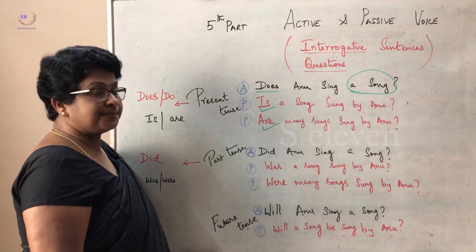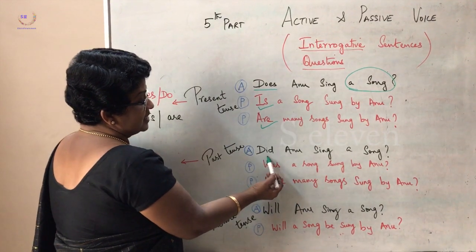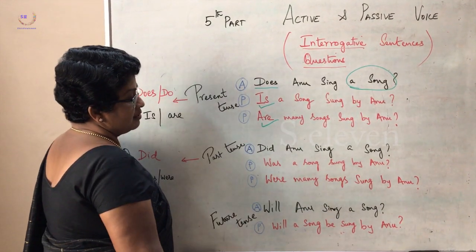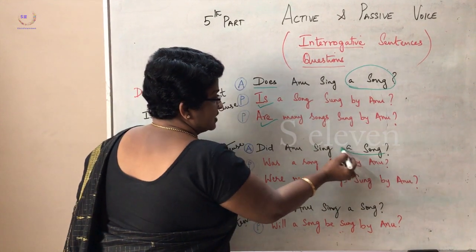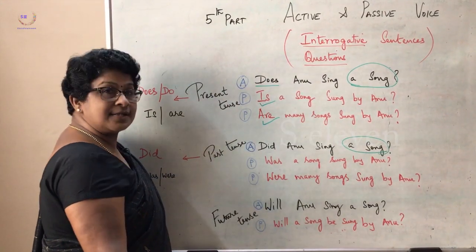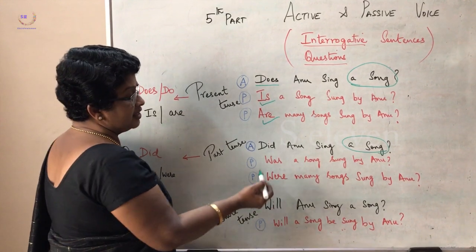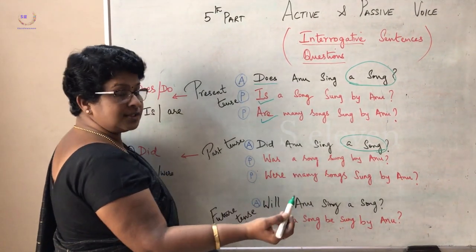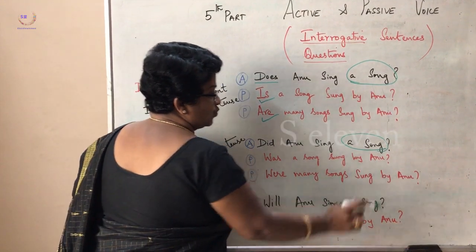Next, let's move on to past tense. Did Anu sing a song? If the object is singular, use was. Was a song sung by Anu? Similarly, did Anu sing many songs? Were many songs sung by Anu?